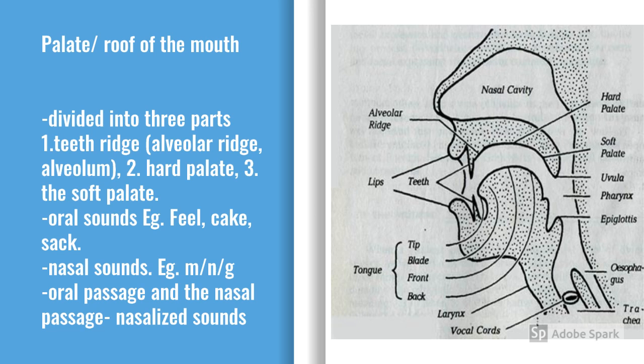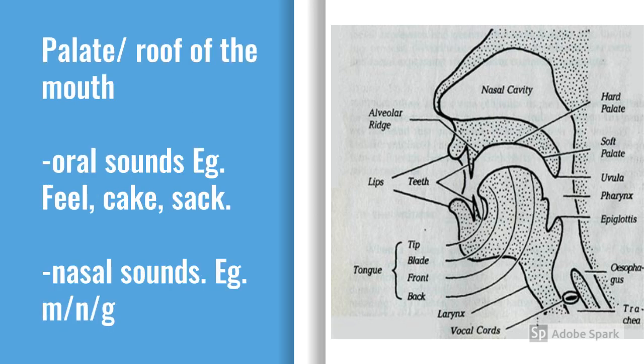The soft palate is mobile — it can be lowered or raised. When the soft palate is raised, it blocks the nasal passage and air escapes only through the mouth; sounds produced in this position are called oral sounds. When the soft palate is lowered, the nasal passage is open and the oral passages are closed, so air escapes through the nose.